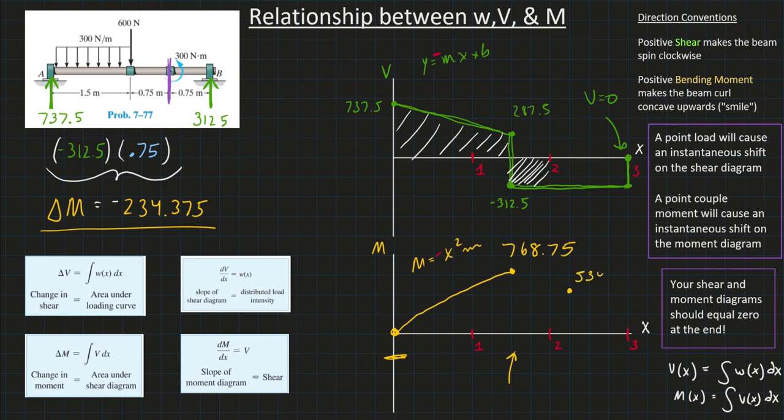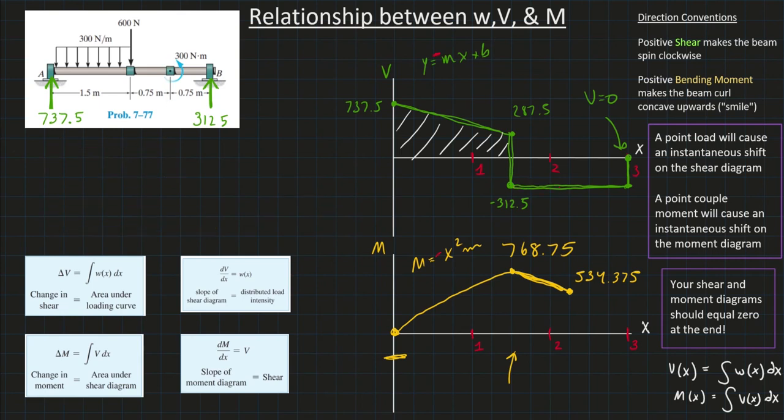So, here is 534.375 and the curve is going to be a line, a straight line. And the reason that I know that is because my v equation is, again, one of those constants. So, if I do an anti-derivative there, I know I'm getting a downward slope line. All right. So, now here's this point applied couple moment going this way with a magnitude of 300.